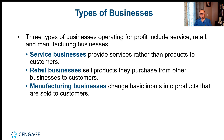Manufacturing businesses change basic inputs into products that are sold to customers. They buy raw materials and supplies and then transform them into a product. That's the main difference between a retail business and a manufacturing business — manufacturing transforms inputs or inventory into a product. Our main focus will be on service businesses and retail businesses; manufacturing businesses are more the focus of the second part of this class.